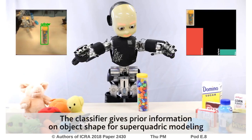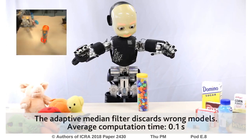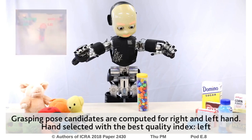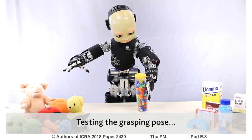The object is correctly classified as a cylinder. Several superquadrics are acquired and averaged in order to discard possible wrong models. Then, grasping candidates are computed both for the right and the left hand. The pose quality index is evaluated and the best hand is chosen, the left one in this case.